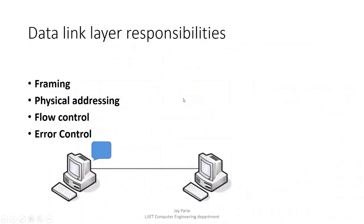The next layer is the data link layer. The first responsibility of the data link layer is framing. When packets are transferred to the data link layer, we convert those packets into frames. Packets are generated in the network layer, and when packets are passed to the data link layer, those packets are converted into frames — this is known as framing.